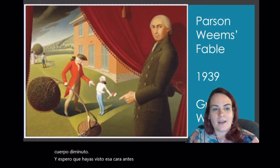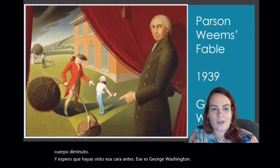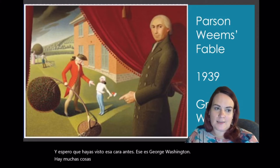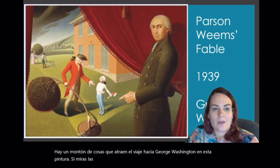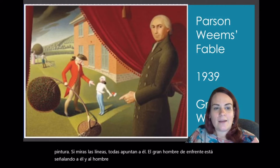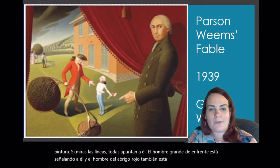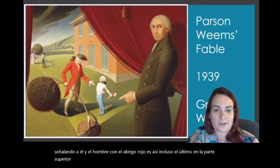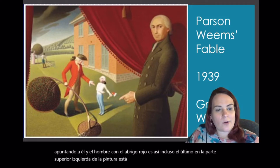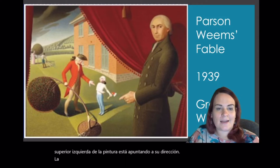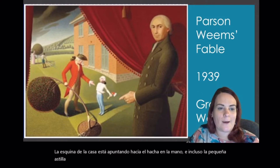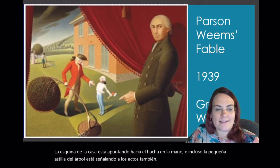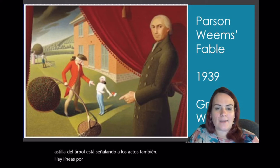That's George Washington. There are a lot of things that draw our eye towards George Washington in this painting. If you look at the lines, they all point to him. The big man in front is pointing to him and the man in the red coat is as well. Even the ladder on the top left of the painting is pointing in his direction. The corner of the house is pointing towards the axe in his hand and even the little sliver of the tree is pointing to the axe as well. There are lines all over this painting that are pointing in that direction.